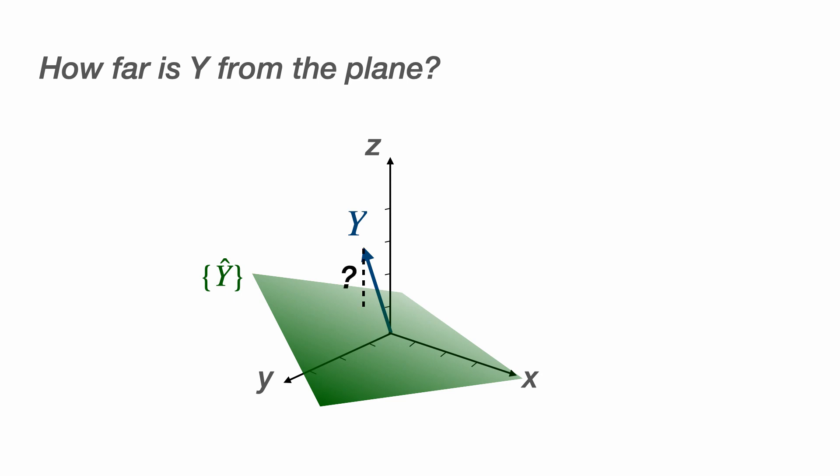This will become important when we're interested in answering the question of how good is our line of best fit. In order to quantify the distance between two vectors, this is where the concept of a norm comes in. So we're now ready to write down our definition of a normed linear space.